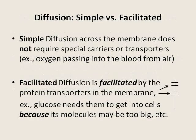Now we compare two types of diffusion: simple and facilitated. Some small molecules, like oxygen, can pass through the membrane easily without any special carriers or transporters. This is what we call simple diffusion. Other molecules, like glucose, may need protein carriers or transporters in the membrane to facilitate their movement, so we call it facilitated diffusion. Always ask: facilitated by what? It is facilitated by the protein carriers. In this case, the rate of diffusion is limited by the number of carriers in the membrane.